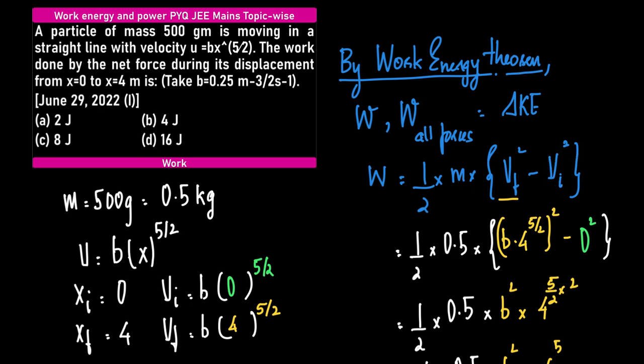What is m? M is 0.5 kg. Now we need to find Vf and Vi. What is given to us? U is given as b times x to the power 5/2.